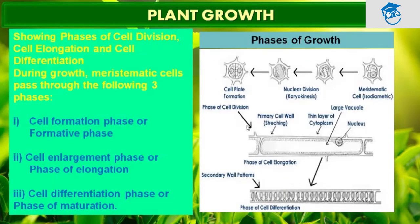The period of growth is generally divided into three phases. First is the cell formative phase, which we also call the formative phase. Second is the cell enlargement phase, also called the phase of elongation. Third is the cell differentiation phase, which we also call the phase of maturation.